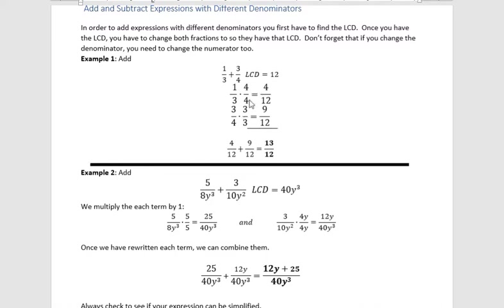So notice when we're multiplying, we're actually multiplying by one, because four over four equals one, three over three equals one. That means we're not changing the value of the fraction, we're just changing it to have a different denominator.